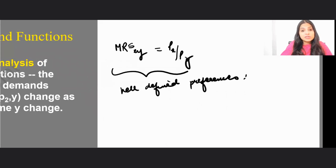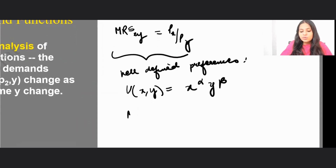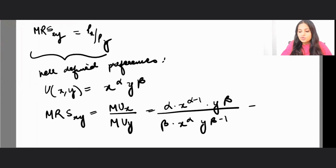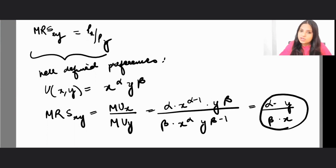For well-defined preferences, let's say the utility function is U(x, y) = x^α · y^β. Then the MRS of x for y is given by MUx / MUy, which equals (α · x^(α−1) · y^β) / (β · x^α · y^(β−1)). If you solve for this, you get α·y / (β·x). This is how we define the MRS for this utility function.